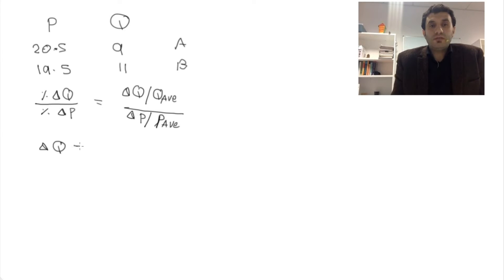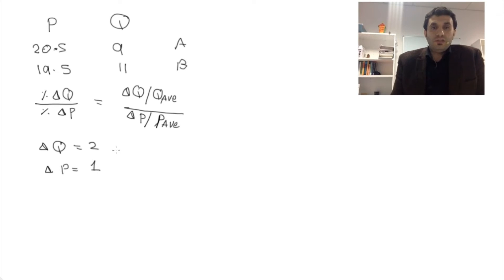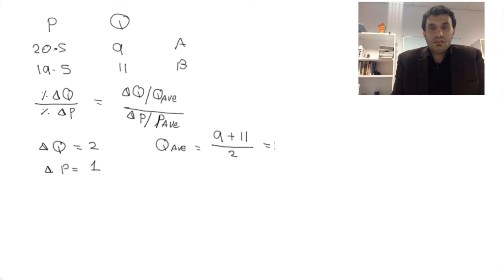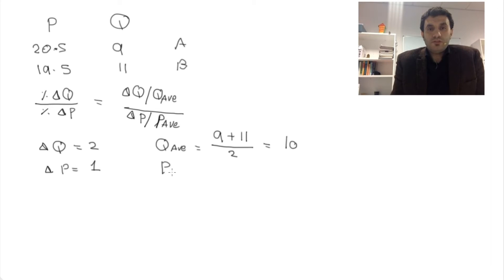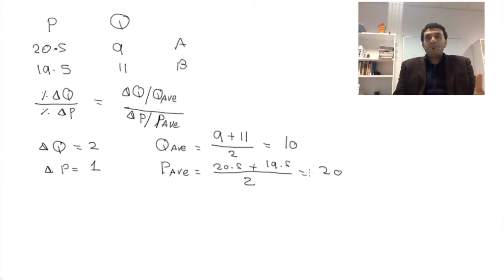The quantity changed from 9 to 11, so the change in quantity is 2. The change in price from 20.5 to 19.5 is 1. The average quantity is (9 + 11) / 2 = 10. The average price is (20.5 + 19.5) / 2 = 20.